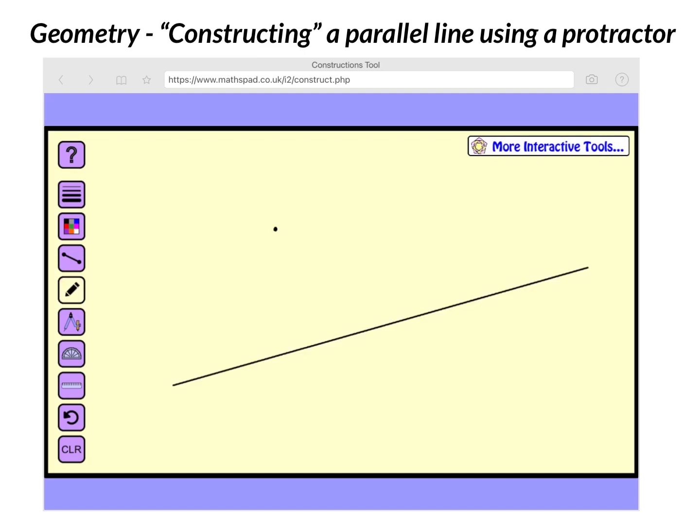We're going to look at how you construct a parallel line through a point using a protractor. I have the word 'constructing' here in quotation marks because as we've talked about in previous videos, a true geometric construction only involves a straight edge where you can draw lines, line segments, rays, and a compass.